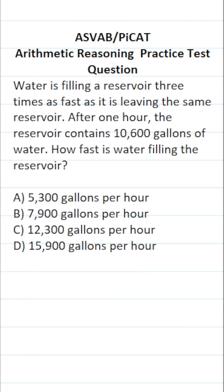This arithmetic reasoning practice test question for the ASVAB and PICAT says: Water is filling a reservoir three times as fast as it is leaving the same reservoir. After one hour, the reservoir contains 10,600 gallons of water. How fast is water filling the reservoir?